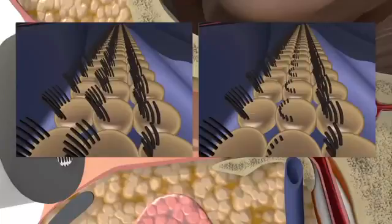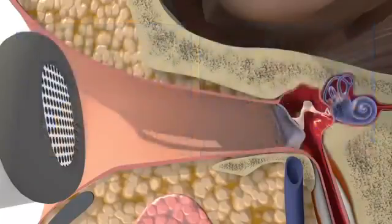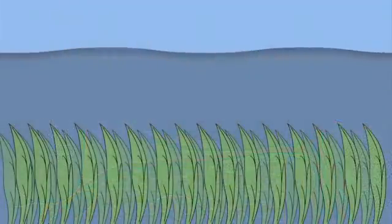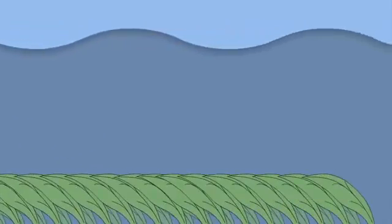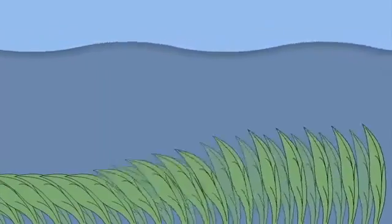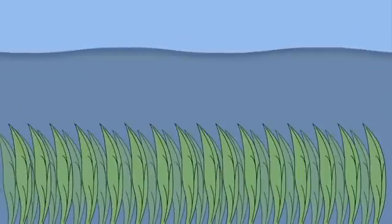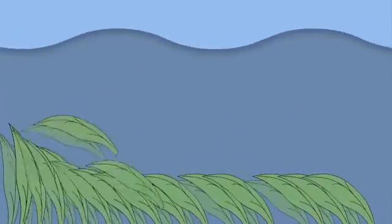If we use our earlier example of seagrass moving with the action of waves in the ocean, we can demonstrate the impact of excessive noise on the cochlear hair cells. Initially, when large waves move over the seagrass, the seagrass bends with the waves, but recovers its position once the wave has passed.